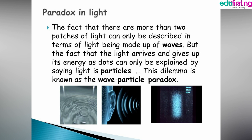The fact that the properties of light can only be described in terms of light being made up of waves — as seen in the left pictures, showing a ripple in water or a wave entering someone's ears — light as a wave, sound as a wave. But on the right-hand side we can see tiny dots on the screen from the Young's interference experiment. Those dots are also light, and the fact that light arrives and gives up its energy as dots can only be explained by saying light is a particle. This dilemma is known as the wave-particle paradox.